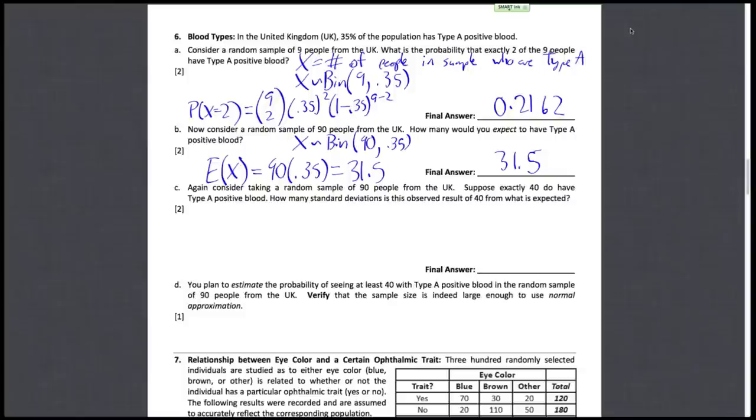Alright. And then part C. Now, again, we consider taking a random sample of 90 people from the UK and suppose that exactly 40 do have type A positive blood. How many standard deviations is this observed result of 40 from what is expected? So here now we need to find the standard deviation of this distribution.